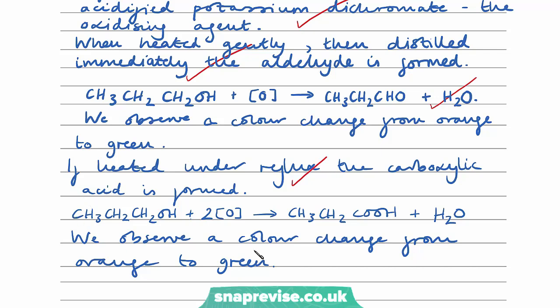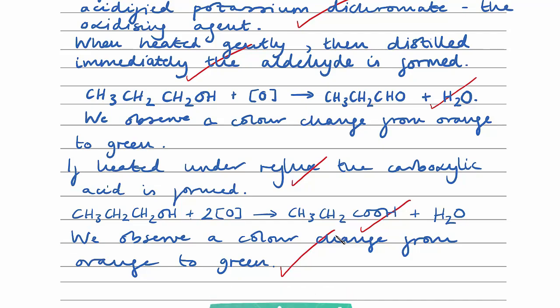This question concerns the oxidation of our alcohol, so it's important that our equation shows the oxidation of our alcohol to form the carboxylic acid, rather than the aldehyde to form the carboxylic acid — so we get a second mark for that. The sixth and final mark is gained for explaining that when oxidation occurs, we observe a color change from orange to green. So there we go — this answer gets the full six marks.